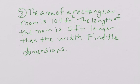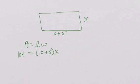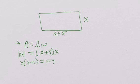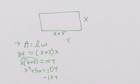The area of a rectangle of a room is 104 feet squared. The length of the room is 5 feet longer than the width. Find the dimensions. So we're going to go ahead and draw our room. Our width is x, and our length is 5 longer than the width, so it's x plus 5. Our area formula is A equals LW. Filling in what we know: 104 equals x plus 5 times x. Distributing, x squared plus 5x equals 104. Now I have to factor this, so I'm going to zero pair out the 104, giving me x squared plus 5x minus 104 to factor.